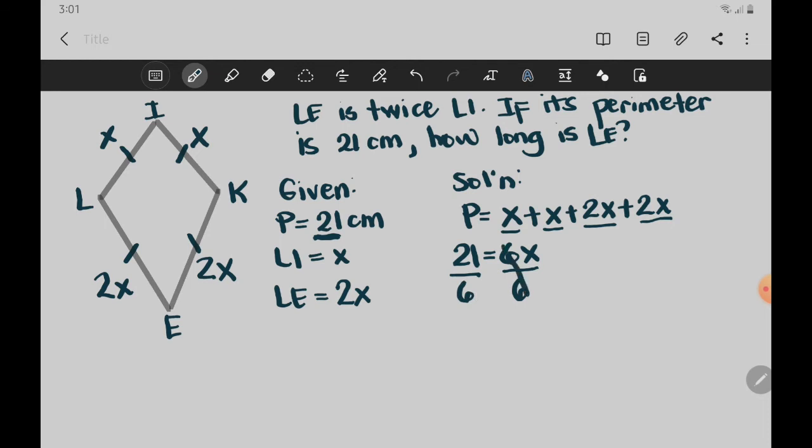And then divide both sides by 6 for us to get the value of X. We can cancel it out, and X is what remains. And then 21 divided by 6, that is 3.5. So our value of X here is 3.5.